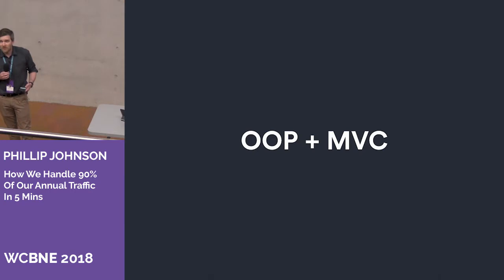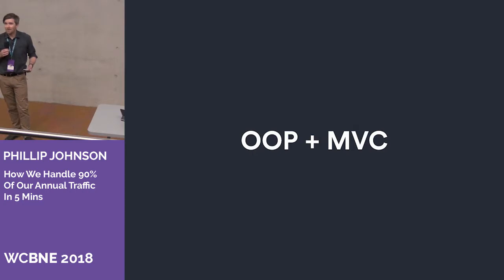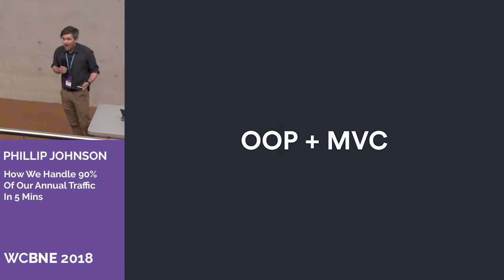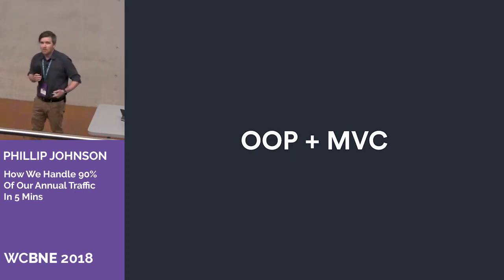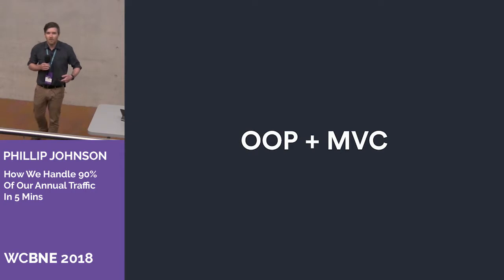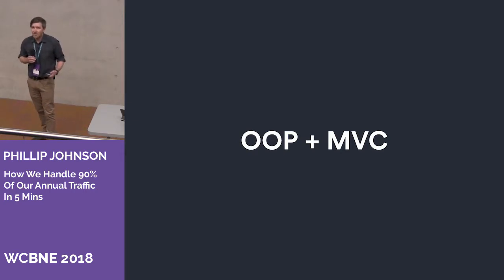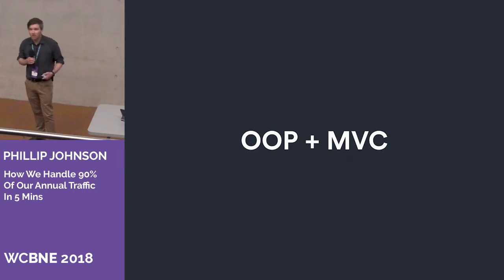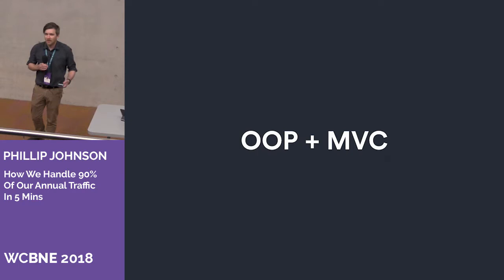My solution was to build the theme using object-oriented programming and MVC. For those that aren't familiar — MVC, you've essentially split out the logic. You've got your styles in one section, your HTML markup in one section. You set up your models which handle the data between the database, and then you've got a controller which just says, get this data and put it on this page. Super important to be able to have a setup like that, particularly if you're working with multiple developers, because you can have one person working on the view, one person working on the data, and when you store it in your Git, there are no conflicts.